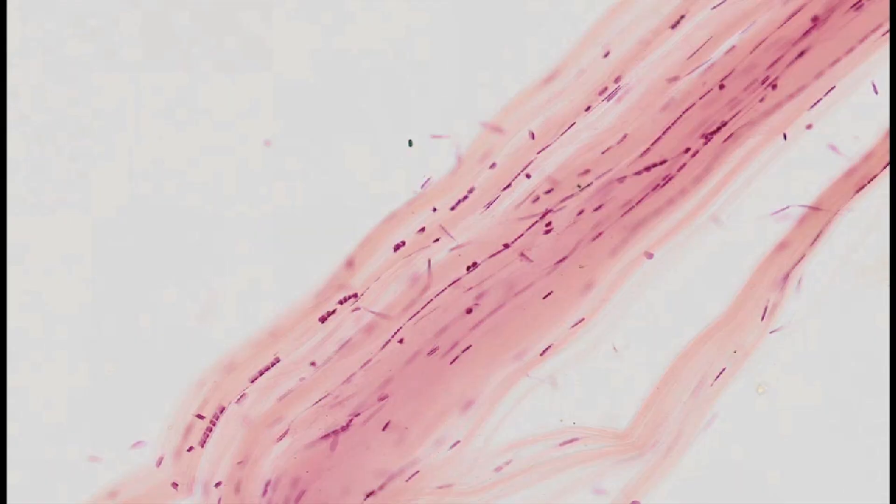Tendon, hematoxylin and eosin staining. A tendon is an example of dense regular connective tissue.